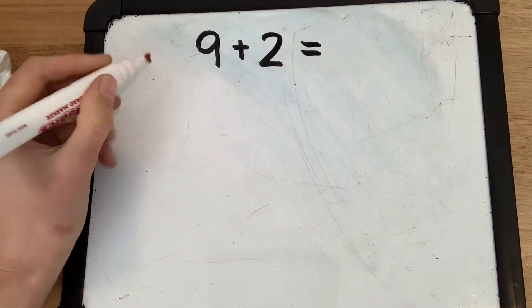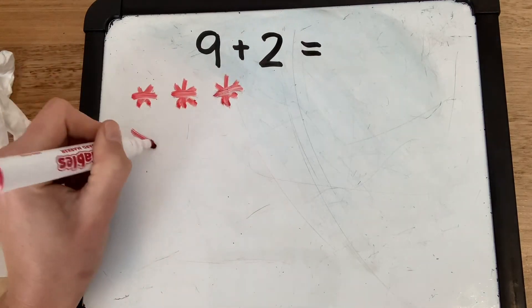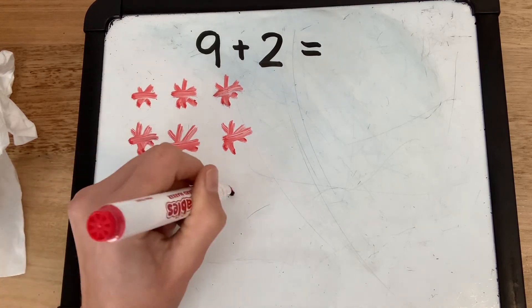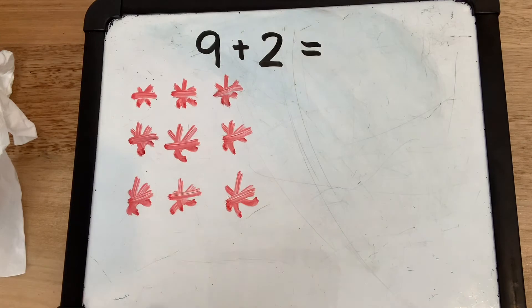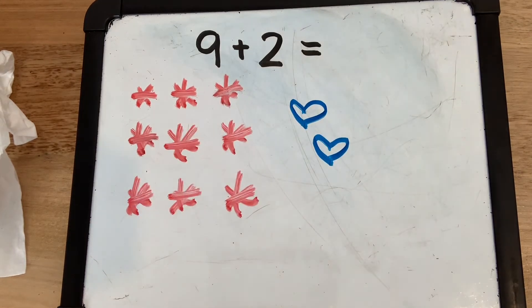Okay, I'm going to do stars. 1, 2, 3, 4, 5, 6, 7, 8, 9 plus 2 more. I'm going to use my different colour so I can see my two groups I'm adding together. 1, 2.